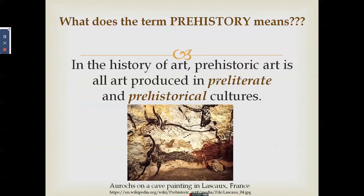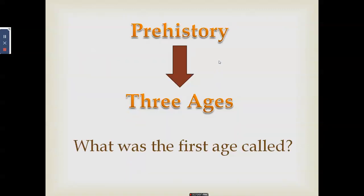So what does the word prehistory mean? From its prefix 'pre' meaning before, prehistoric art is art produced in pre-literate and pre-historical cultures. Pre-literate refers to a society that has not developed the use of writing, and pre-historical refers to the period before written records. They are synonymous — this is the time when no form of writing was yet present. The prehistoric period is divided into three stages.